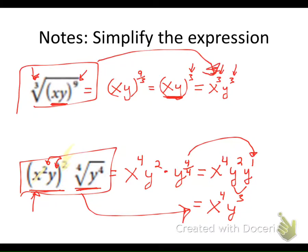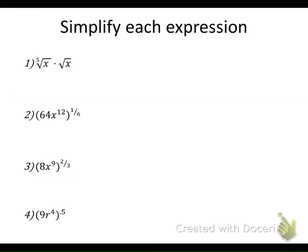Here are some problems for you to practice. You might want to pause the video and try these on your own, then play to check your work. Anytime you have radical form it helps to convert to exponent form. For the first value that becomes X to the 1/5, because the exponent becomes the numerator and the index becomes the denominator. For the second one, there's no index shown, but when no index is shown that's just a square root, meaning the index is 2.